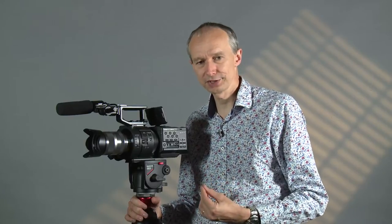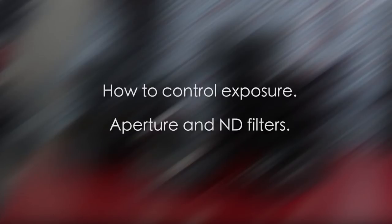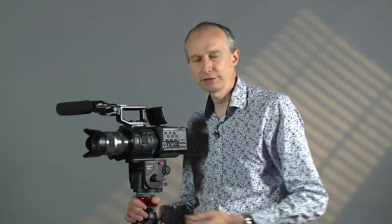So how do we control our exposure? Well there are three things that affect our exposure. The first one is how much light is falling on the sensor. The second is how long we allow the light to fall on the sensor, controlled by the shutter speed. And the last one is how sensitive we make the sensor — if we make the sensor more sensitive, the picture becomes brighter.